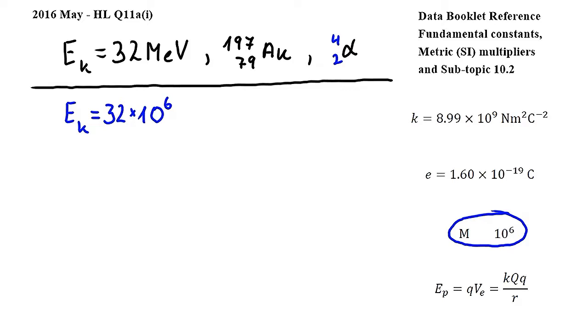To convert from electron volts to joules, I have to multiply this value by the elementary charge, which can be found in the fundamental constant section of the data booklet, and which is given to be 1.6 times 10 to the power of negative 19 coulombs. And this calculation gives us 5.12 times 10 to the power of negative 12 joules for the kinetic energy.